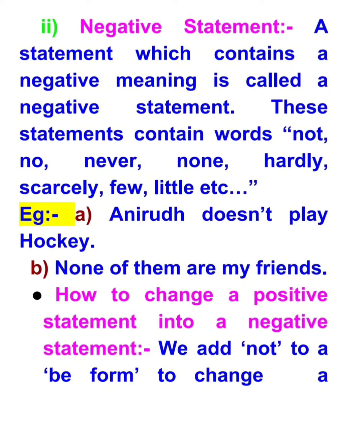Negative statements contain words like: not, no, never, none, hardly, scarcely, few, little. For example, 'Aniruth doesn't play hockey' — it contains 'not', so it is a negative statement. 'None of them are my friends' — it contains 'none', which denotes a negative word, so it is a negative statement.